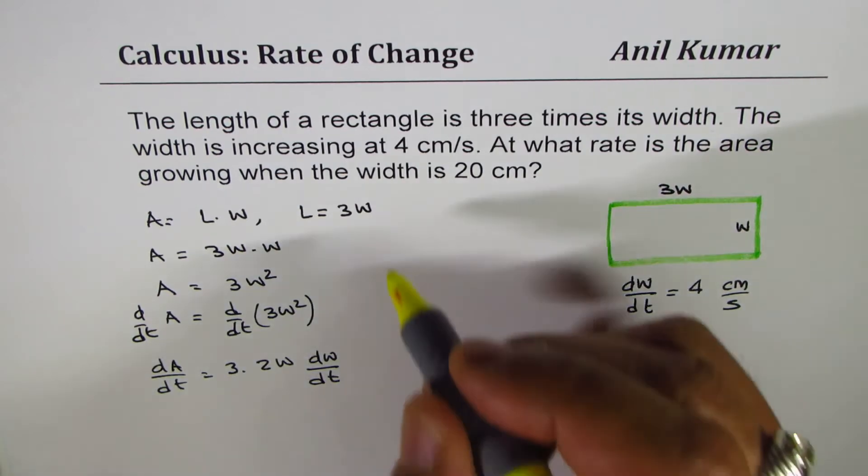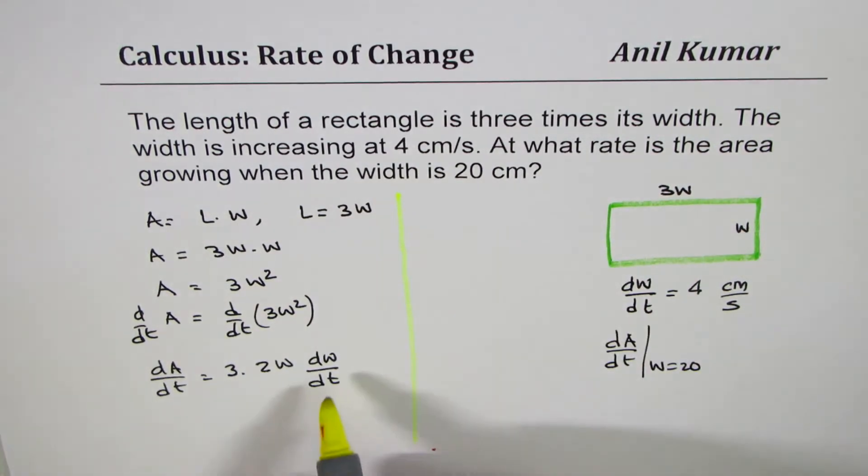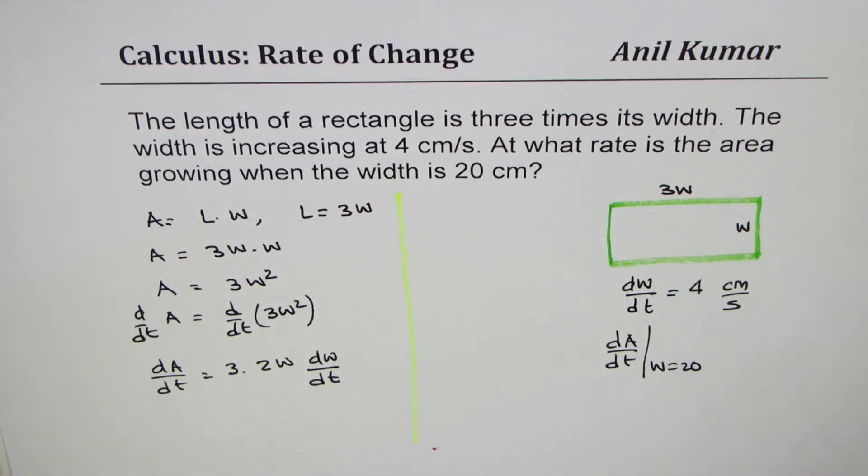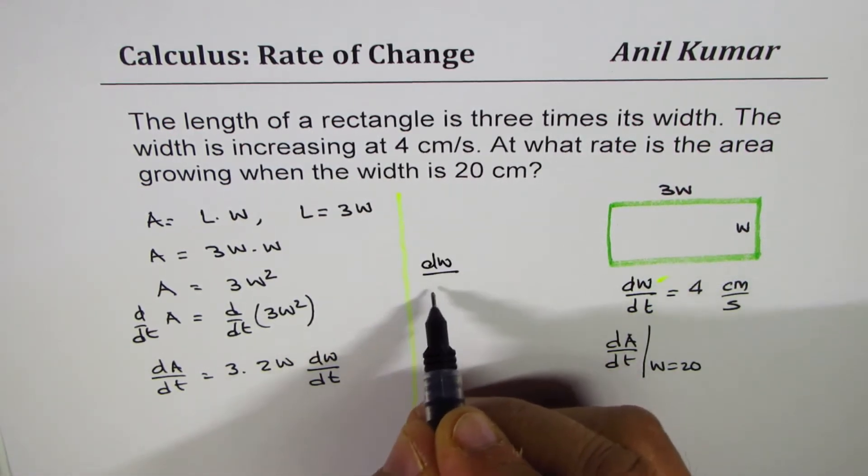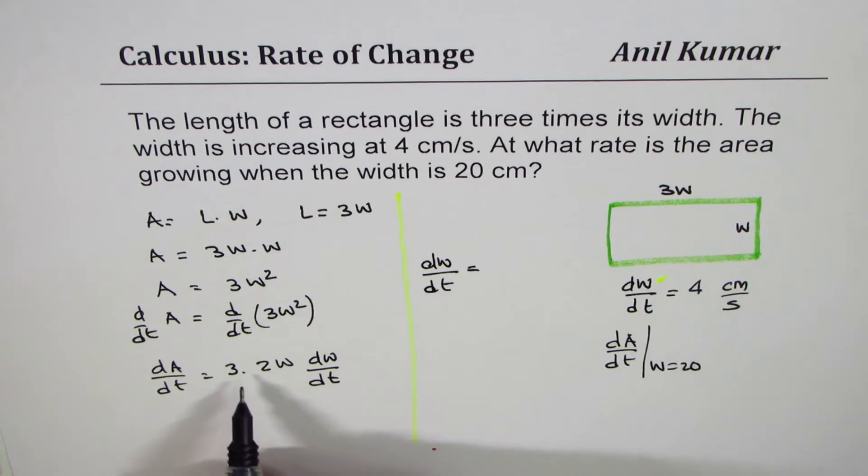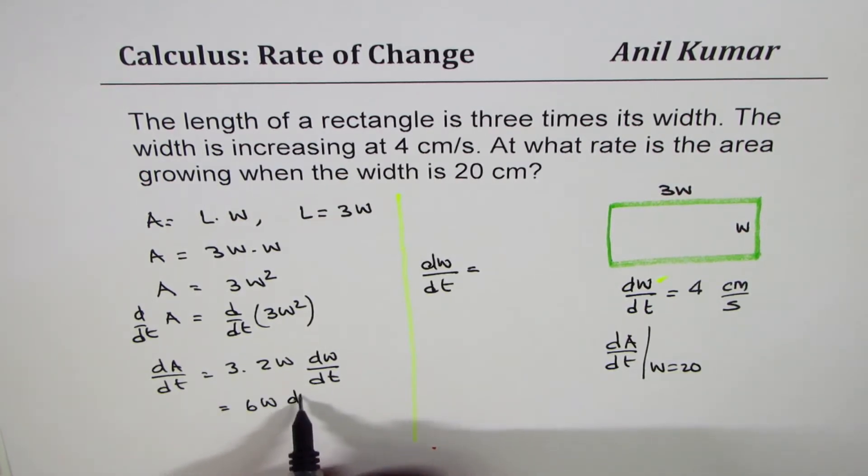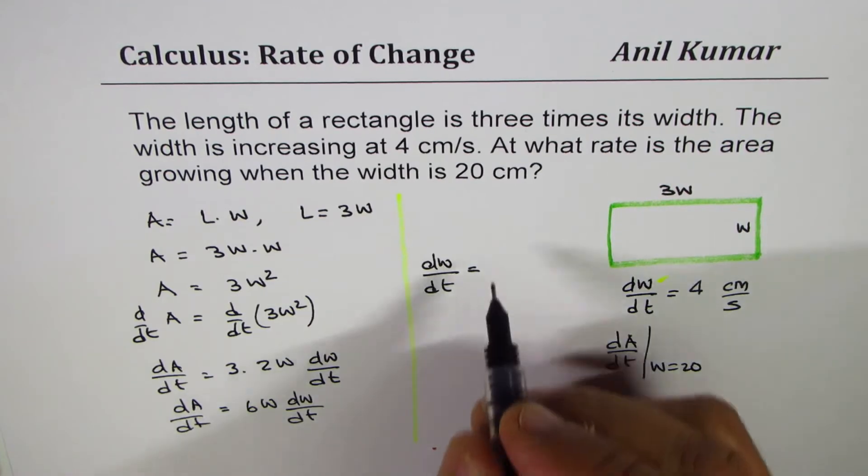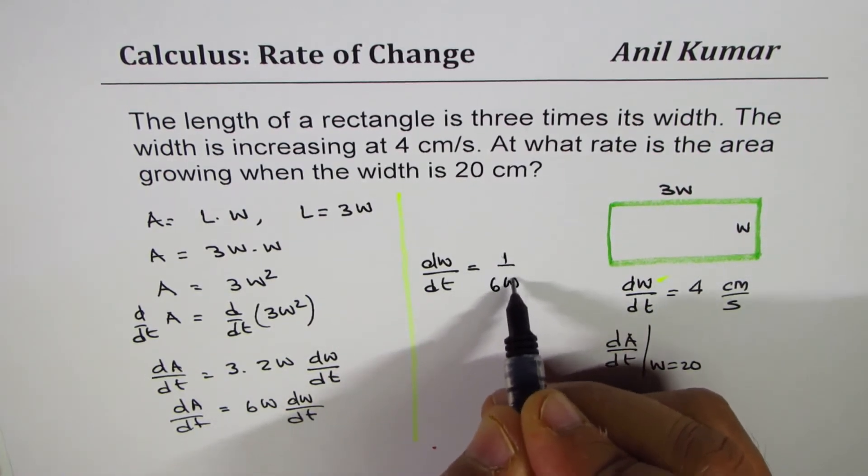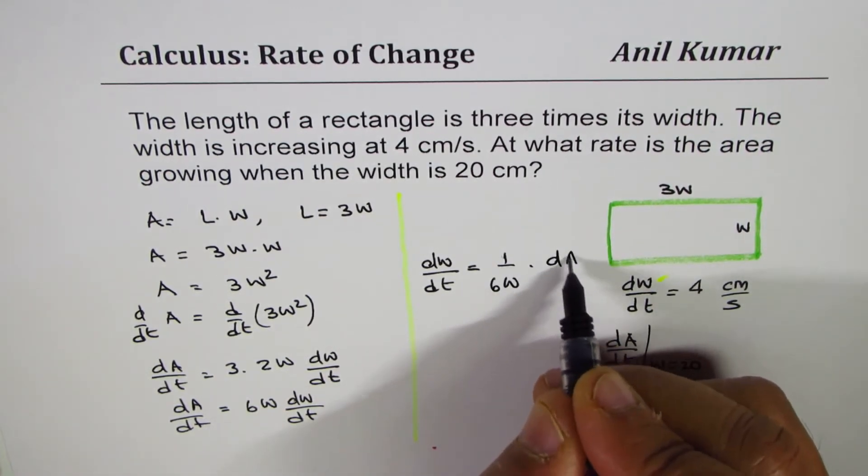We have an expression here involving dW/dt, and that is what we're interested in finding. Let's rearrange: we get dW/dt equals... 6W times dW/dt... so dW/dt is 1 over 6W times dA/dt.